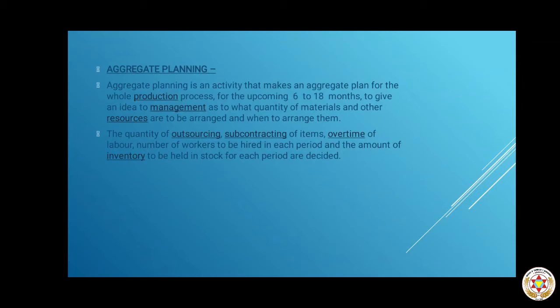Aggregate planning ka matlab yeh hai ki, it is a planning process through which an aggregate plan is created. That aggregate plan covers the entire production process for the coming 6-18 months. At least six months is required for it to be called an aggregate plan. It can go beyond six months — 2 years, 3 years, or even 5 years — but typically plans beyond five to six years are not made.